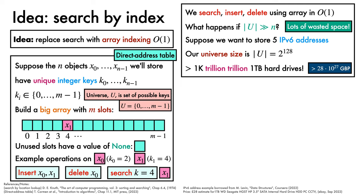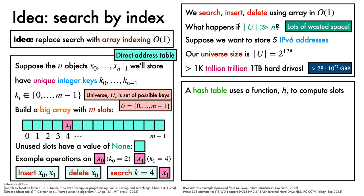Hash tables offer an ingeniously economic solution to this problem. Rather than using keys directly as indices, a hash table adds a layer of indirection by using a function, which we'll write as h, to compute the slot associated with each key. This function h, which we'll call a hash function, maps each possible key in the universe into one of the m slots, and is designed with the goal that it will allow us to use a much smaller array to store our n objects.